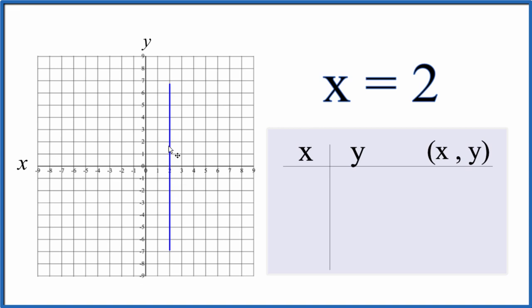So x is always going to be 2, but we'll have different values for y. Let's just put some arrows there, show that that goes to infinity, and this is the graph for x equals 2.